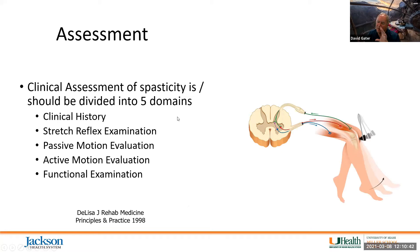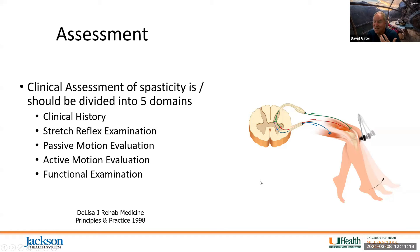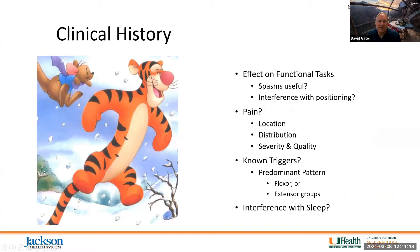We'll talk about how we measure spasticity and how we assess an individual to determine the degree to which their spasticity is problematic. We'll talk through five domains: the clinical history, the stretch reflex exam, the passive motion evaluation, the active motion evaluation, and functional examination. All five of these domains are necessary to determine whether or not we need to treat spasticity.